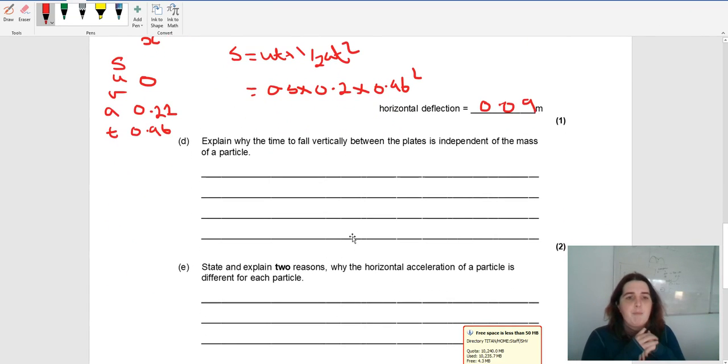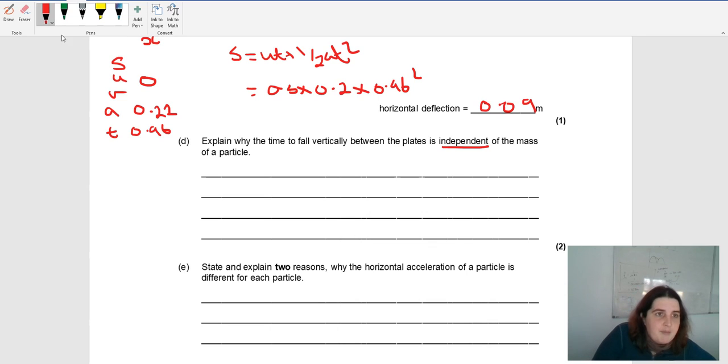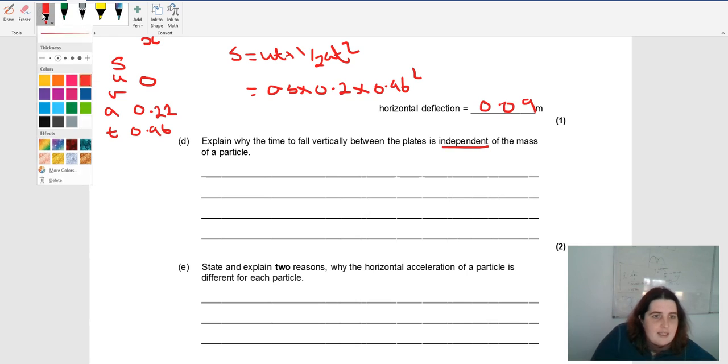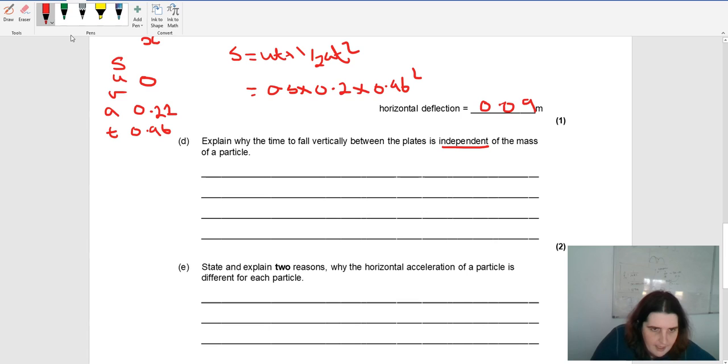Explain why the particle time to fall is independent. The word independent means I don't care about the mass. So what you've got to say is, since F equals MG, F over M equals G. This is the acceleration equation.